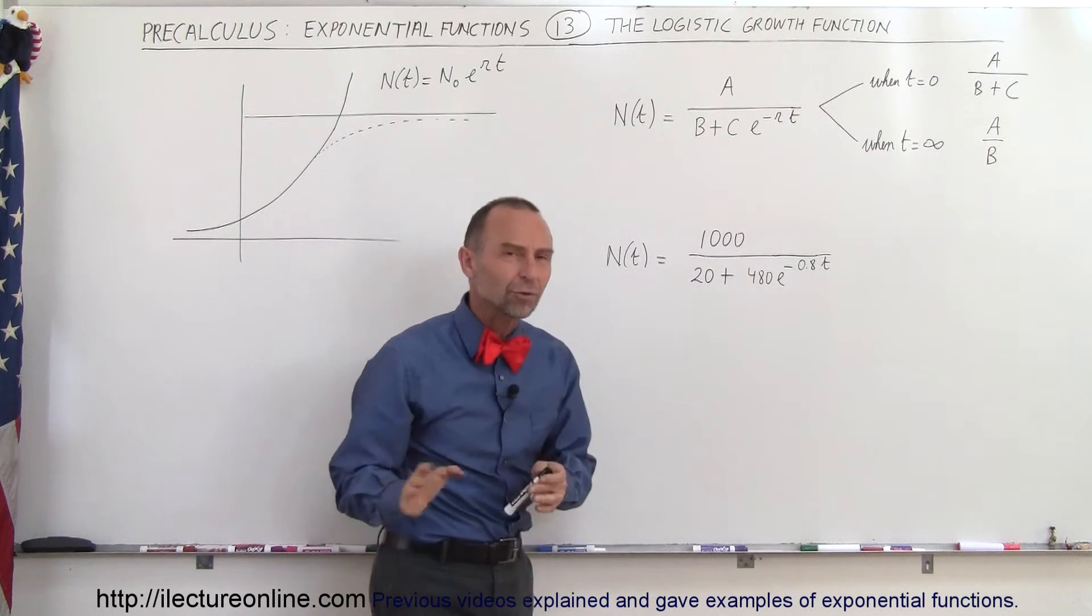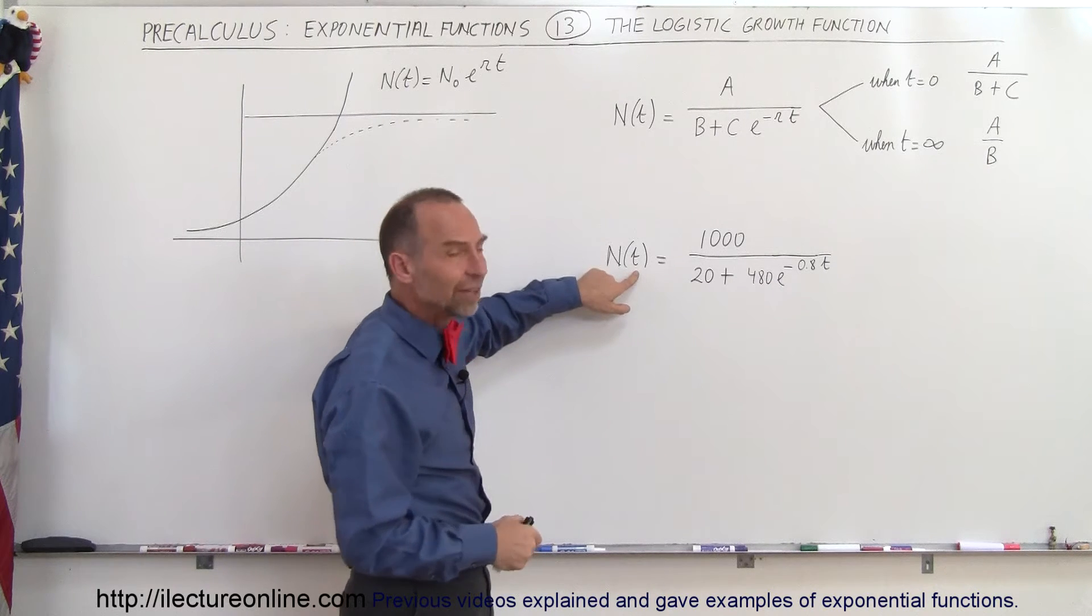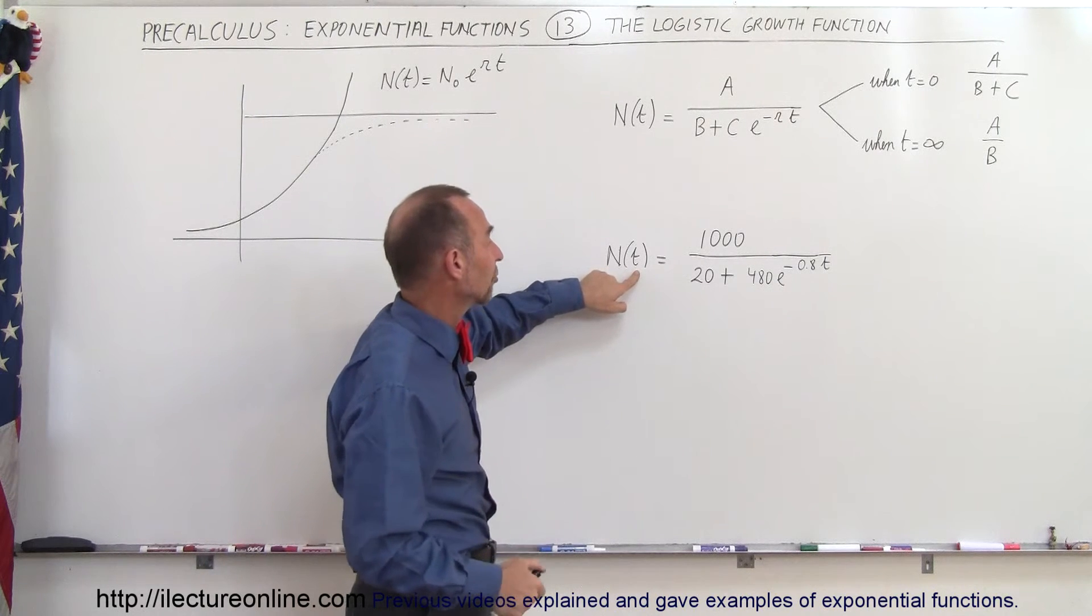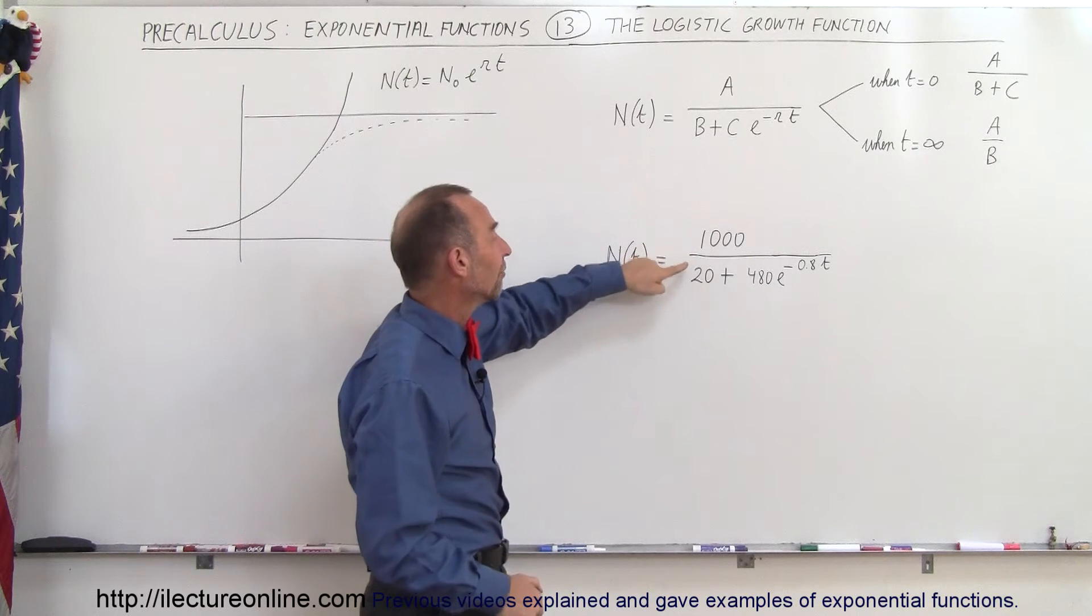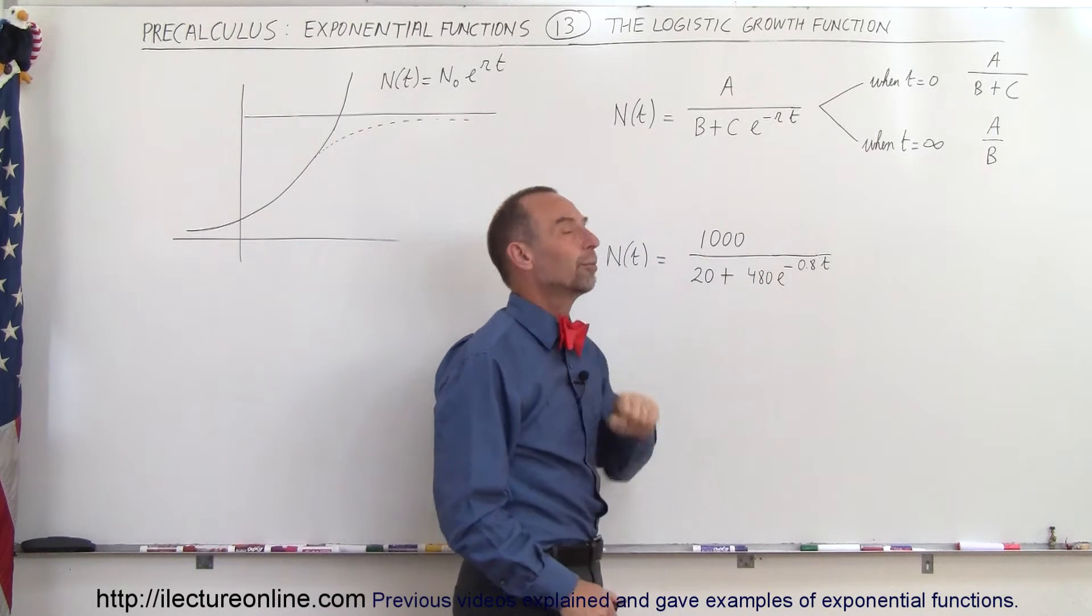Now here's an example so you can look at some numbers and see what you would get. So here we have N as a function of time, the amount of the population as a function of time is equal to 1000 divided by the quantity 20 plus 480 times e to the minus 0.8 times t.